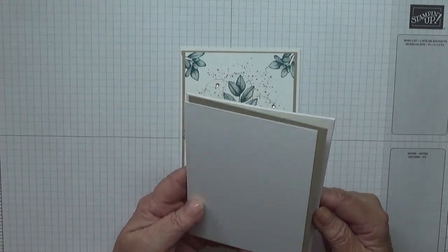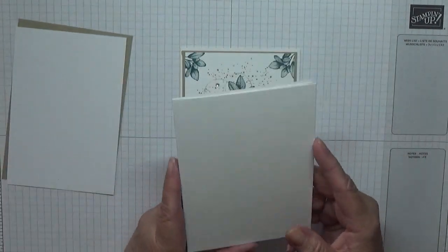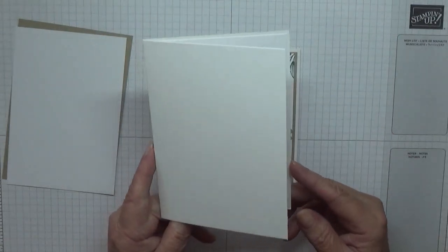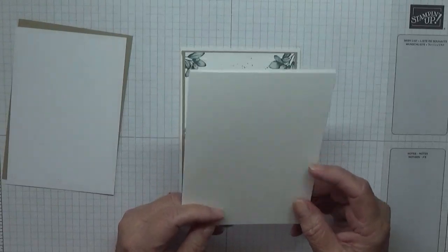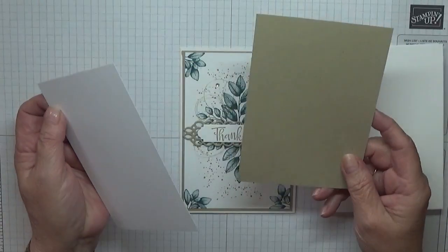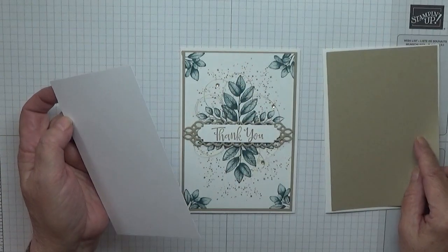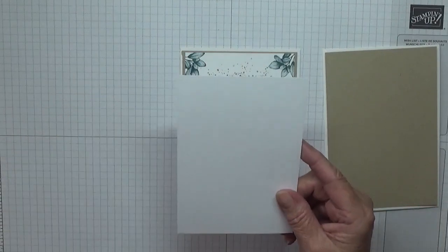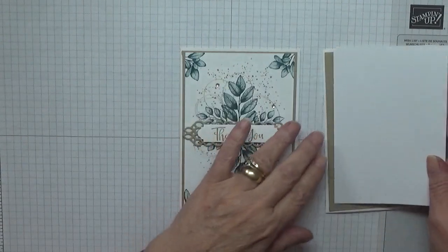My card base is blank card at eight and a quarter by five and seven eighths, scored at four and one eighths, folded in half. I also have a piece of crumb cake at five and five eighths by three and seven eighths, and a piece of white cardstock at five and a half by three and three quarters.